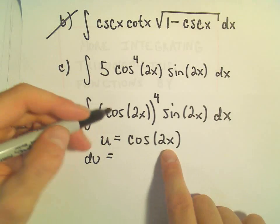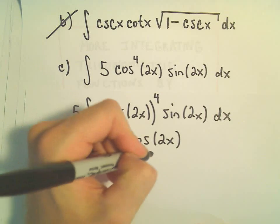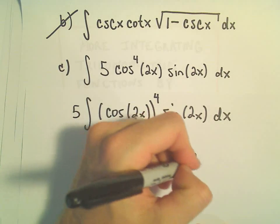If we pick u to be cosine of 2x, the derivative of cosine is negative sine. Leave the inside alone. Then we have to take the derivative of the inside, so times 2.